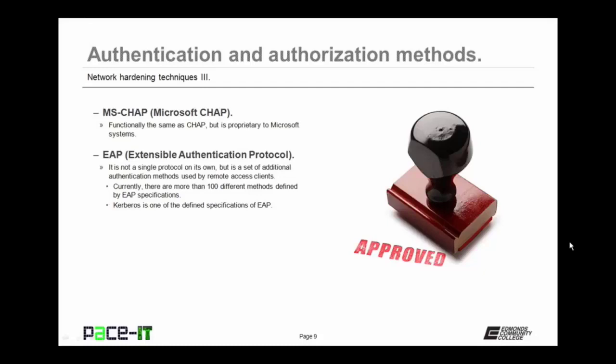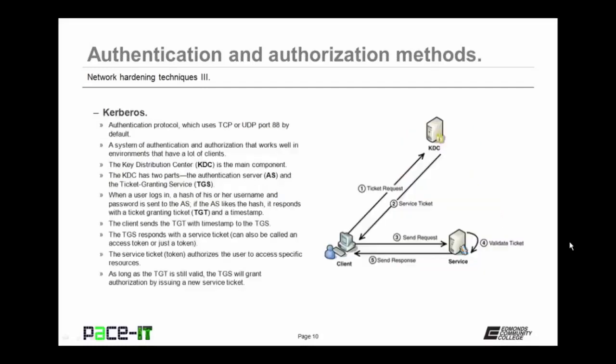So let's talk about Kerberos. It's an authentication protocol which uses TCP or UDP port 88 by default. It's a system of authentication and authorization that works well in environments that have a lot of clients. The main component of Kerberos is the key distribution center, or KDC. The KDC has two parts: the authentication server, or AS, and the ticket granting service, or TGS. When a user logs in, a hashed value of their username and password is sent to the authentication server. If the AS likes the hash, it responds with a ticket granting ticket, or TGT, and a timestamp.